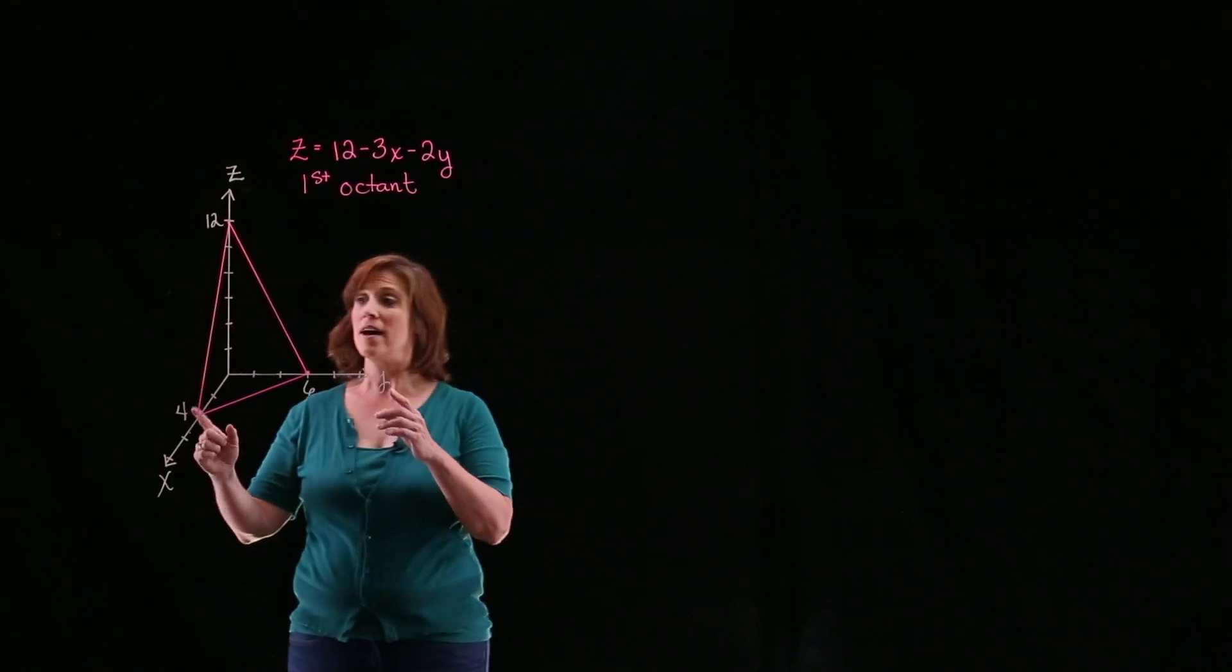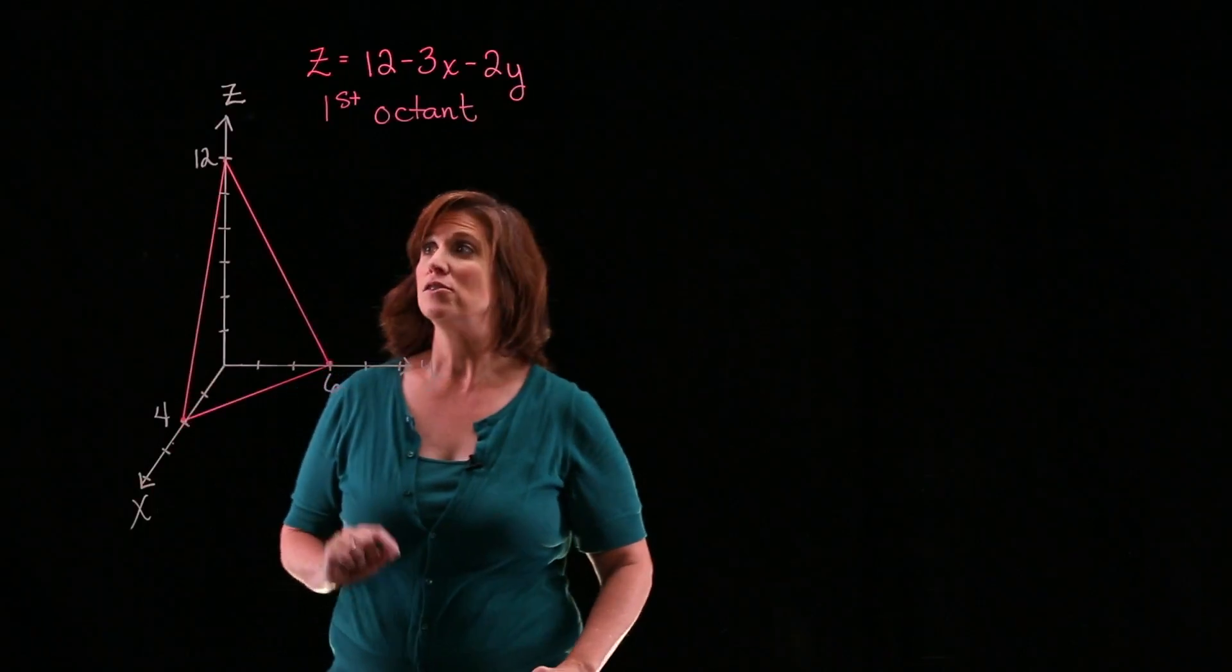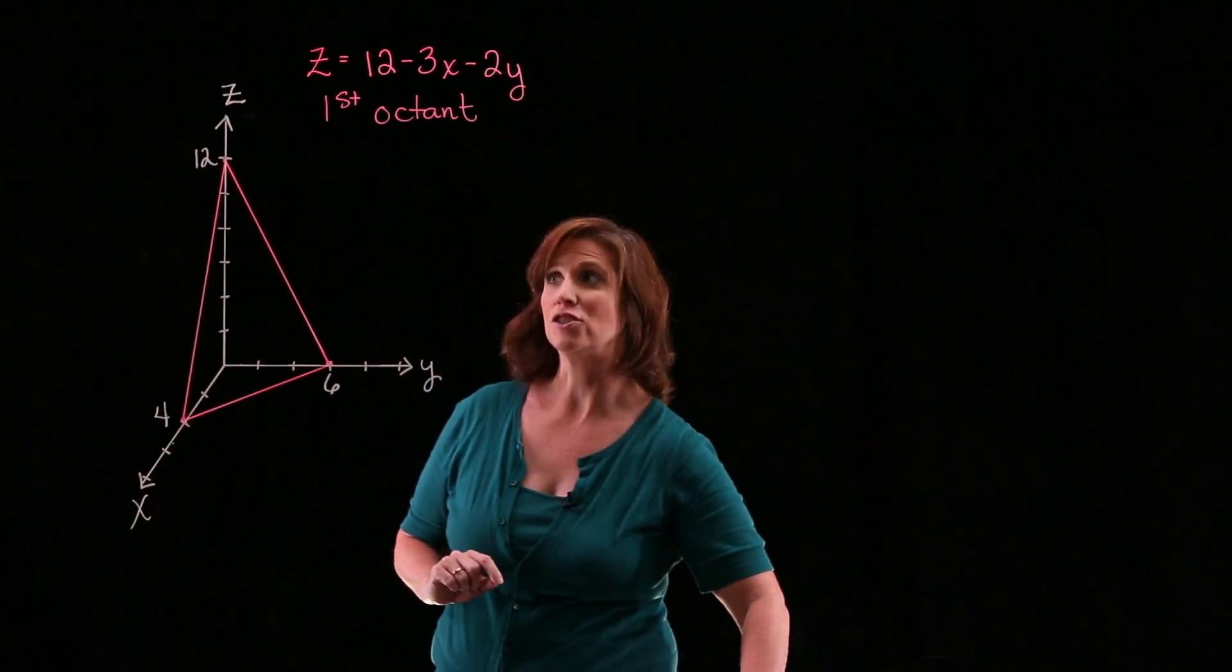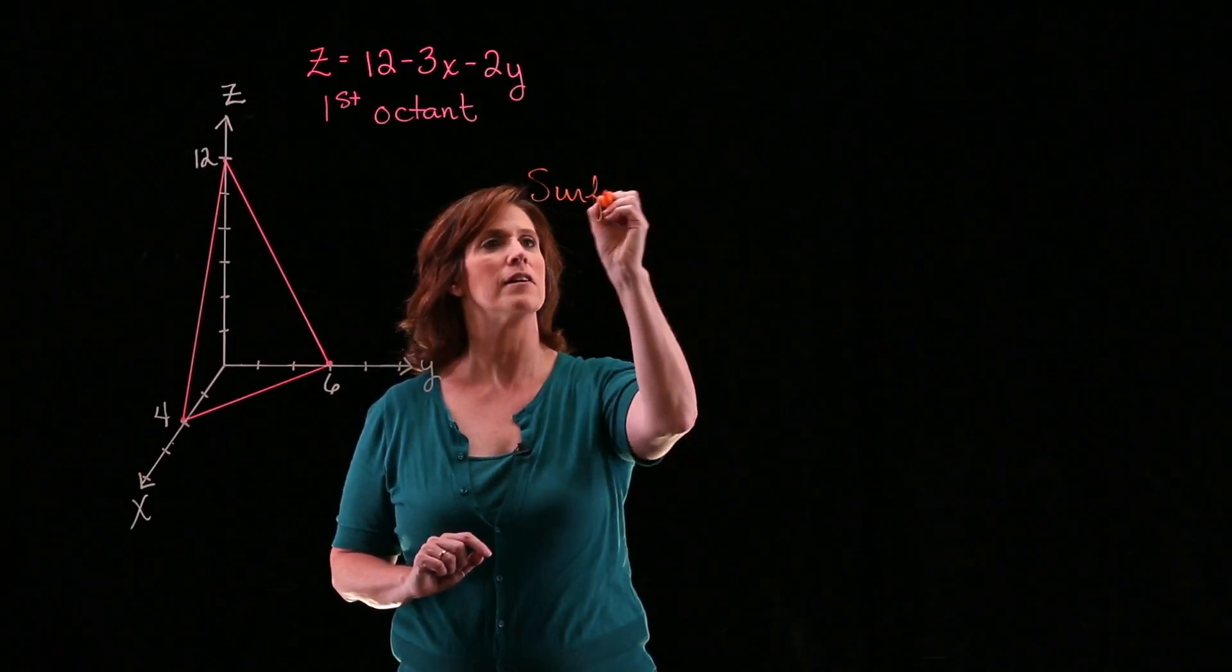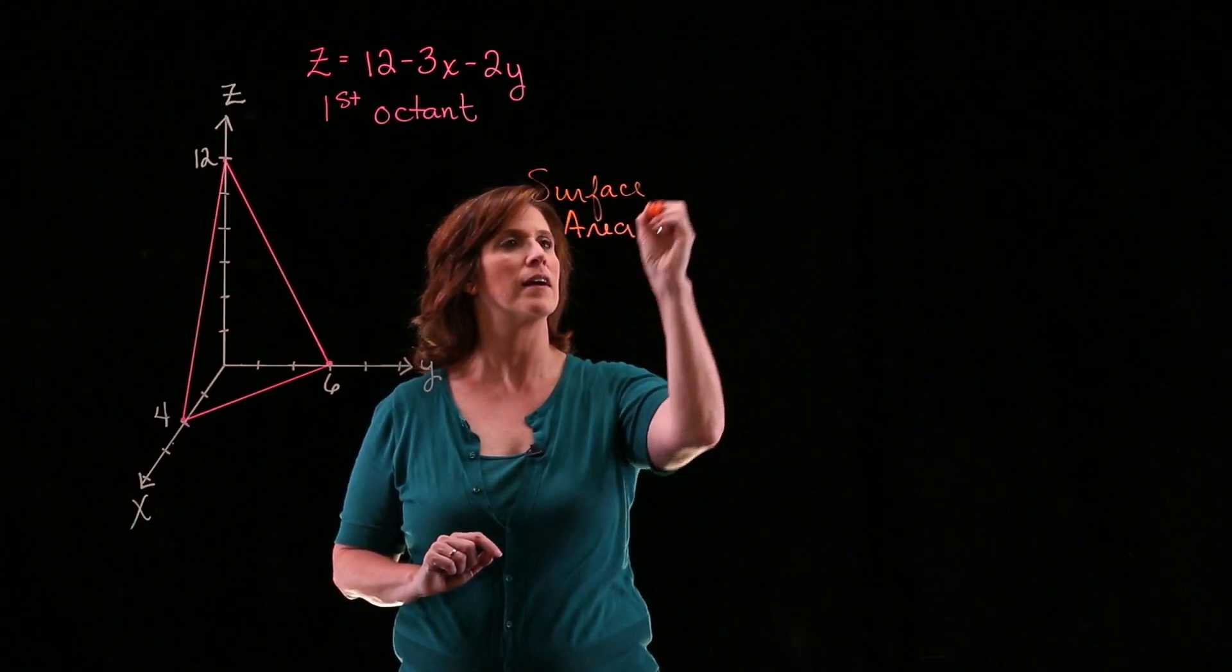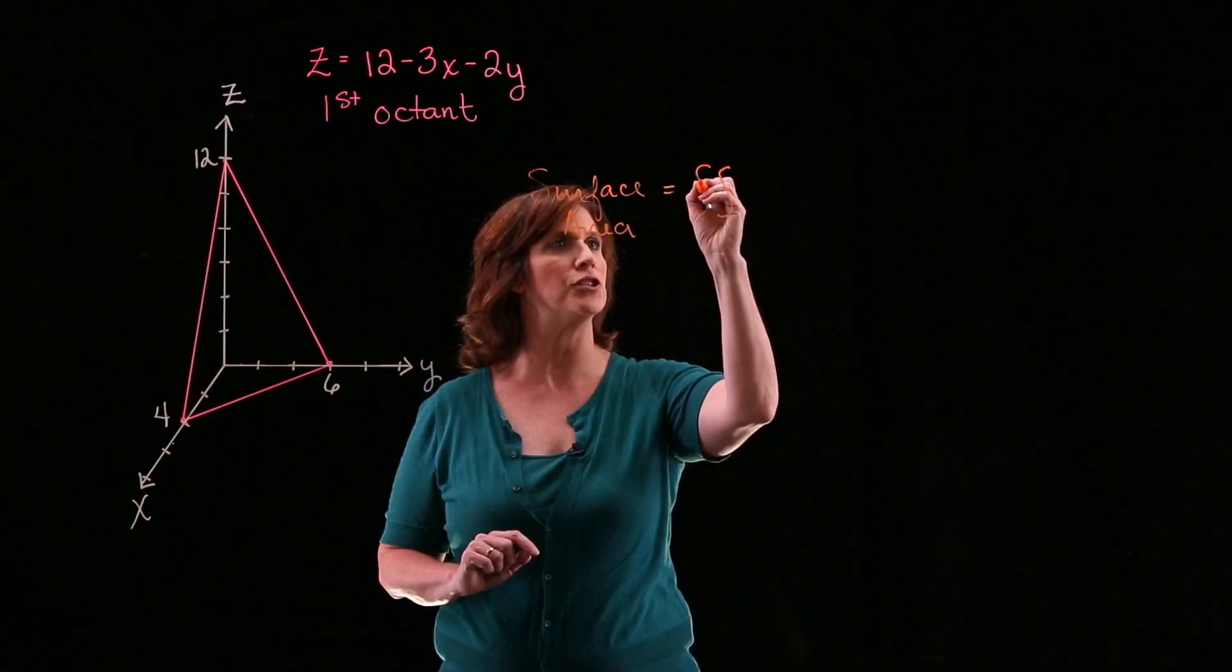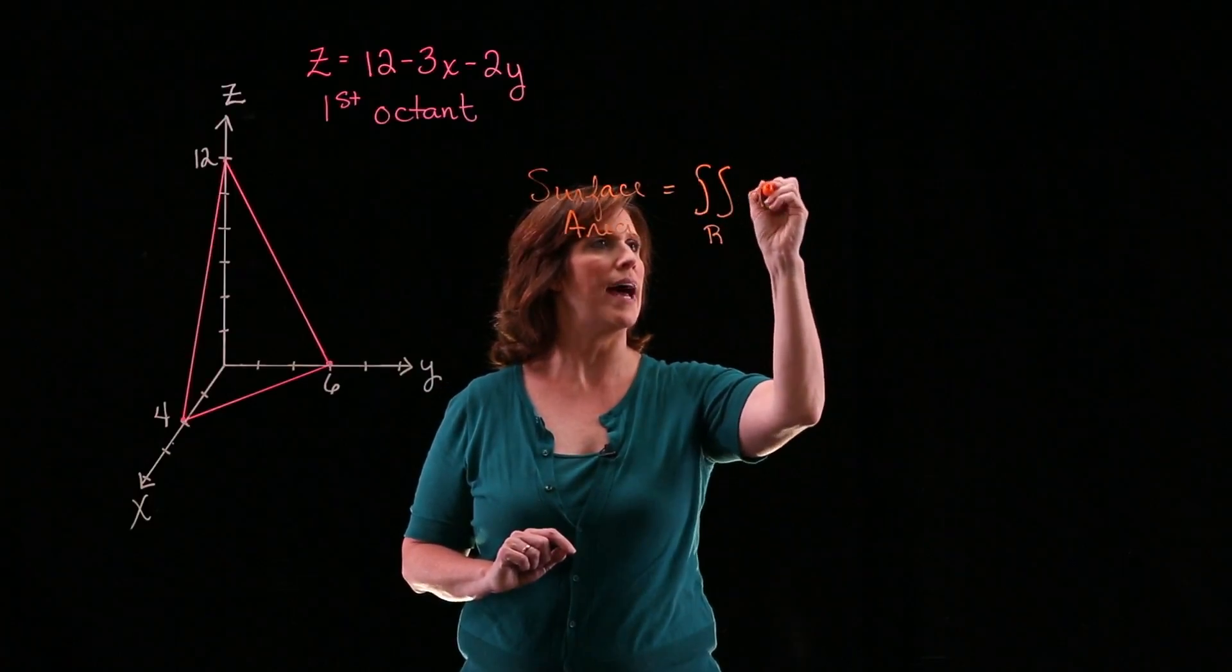Now, I already have a sketch of what that plane will look like in the first octant. So I know that I can calculate the surface area by using a double integral.